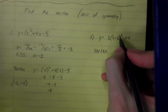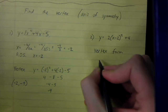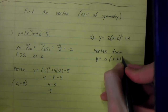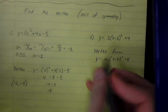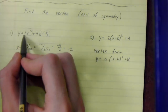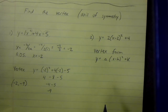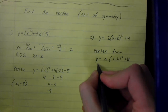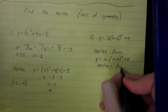Your vertex is actually given to you. Vertex form looks like this: y equals a times (x minus h) squared plus k. The value a is the same a that determines if your graph opens up or down depending on whether it's positive or negative. But h and k are your vertex — the vertex is (h, k).